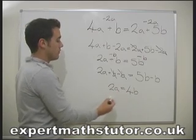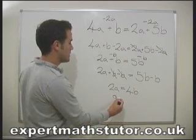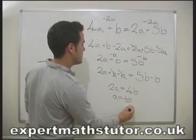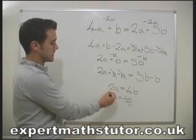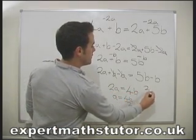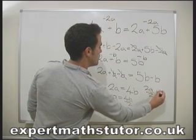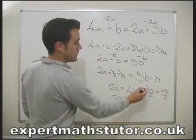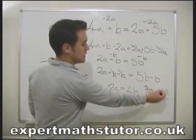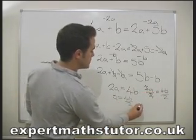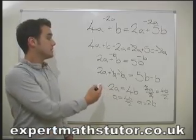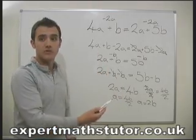What will a equal? Well, if 2a equals 4b, a will equal 4b divided by 2. We divide both sides by 2: 2a over 2 equals 4b over 2. The 2s cancel, and we're left with a equals 2b. That is essentially rearranging equations — solving equations — whatever you want to call it.